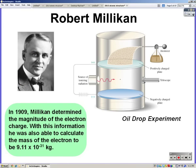In 1909, Millikan determined the magnitude of the electron charge using the oil drop experiment. With the information of the electron charge, he was also able to calculate the mass of the electron to be 9.11 times 10 to the negative 31 kilograms.